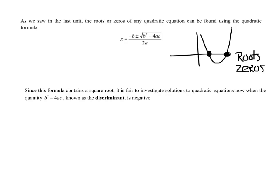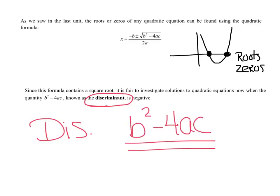Since this formula contains a square root, it is fair to investigate solutions to the quadratic formula now when the quantity b squared minus 4ac, known as the discriminant, is negative. So discriminant is just the junk under the radical, b squared minus 4ac, and that will pop up on our quizzes a lot. Not the radical itself, just the junk under the radical. And what they're telling us is we are going to now get a negative number under that radical.